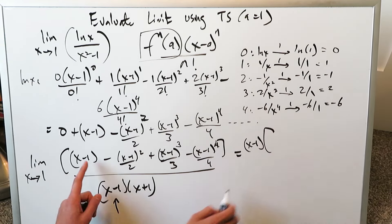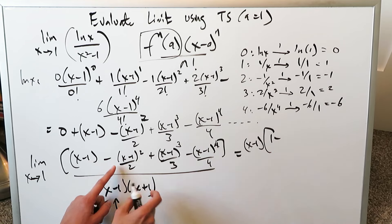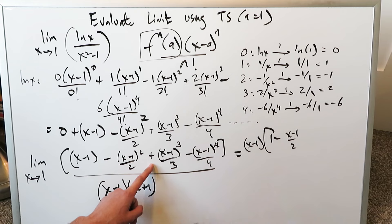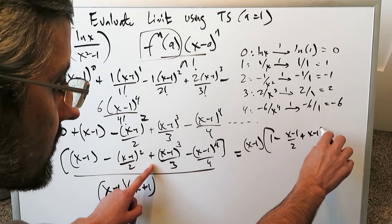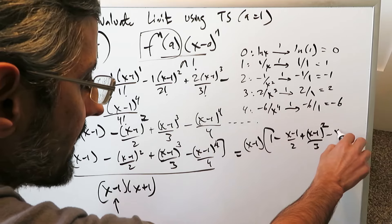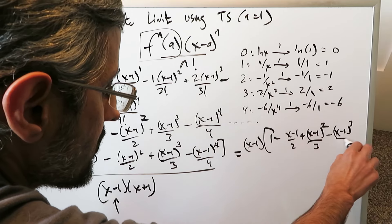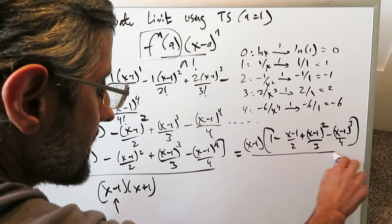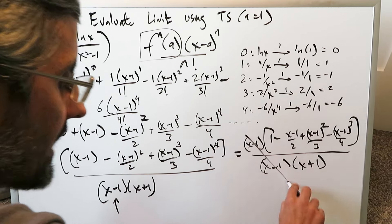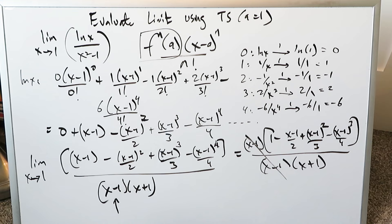Look here in the numerator and isolate x minus 1. When I isolate it I'm getting from here a 1. From here I'm getting x minus 1 times 1 over 2. From here I'll get plus x minus 1 whole squared over 3. From here x minus 1 cubed over 4. Close it out and then you have this x minus 1 and x plus 1. You'll cancel this out.